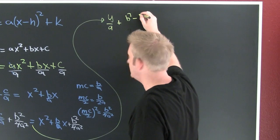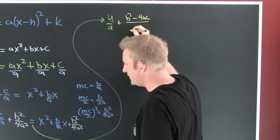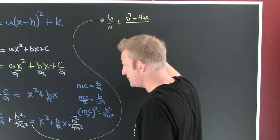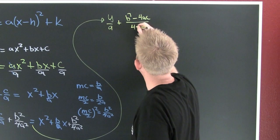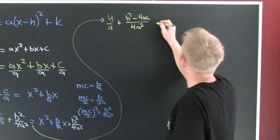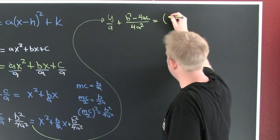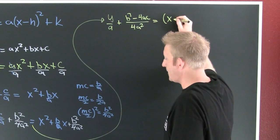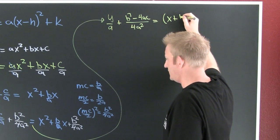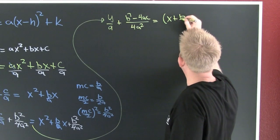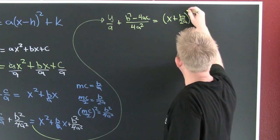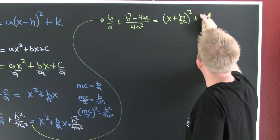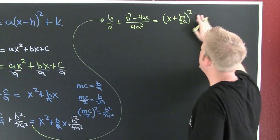And then I'm going to add their numerators, and then this is going to be plus b squared minus 4ac over, wait for it, 4a squared. And on the right that's x plus my middle coefficient over two, b over 2a, squared.